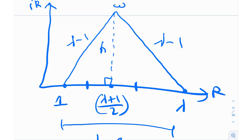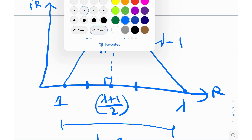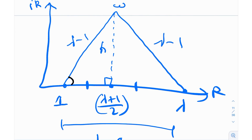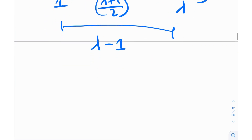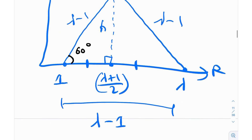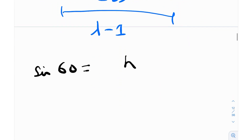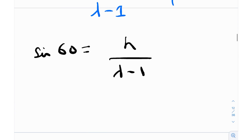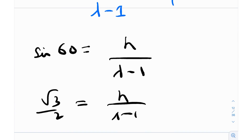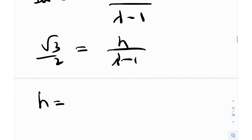We know the triangle is equilateral so all angles are 60 degrees. Using sine: sin 60 equals h over (lambda minus 1), and sin 60 is root 3 over 2. So h equals (root 3 over 2) times (lambda minus 1). That gives us h as a function of lambda, which significantly reduces the problem.